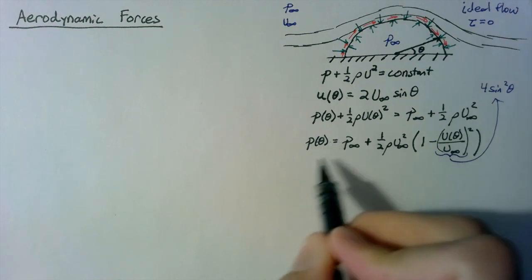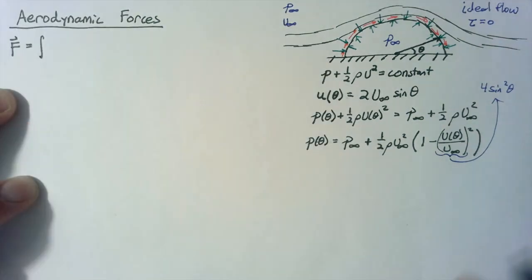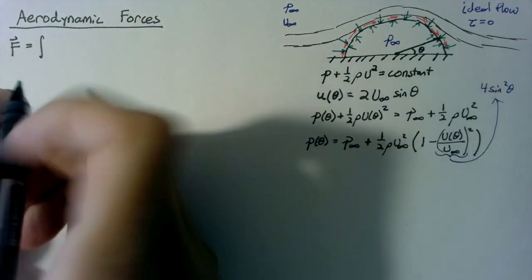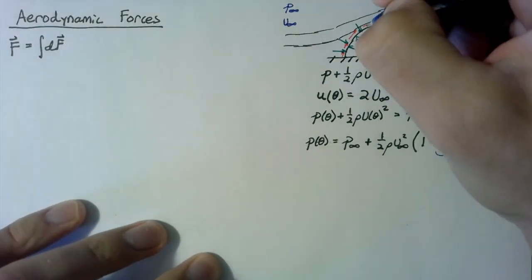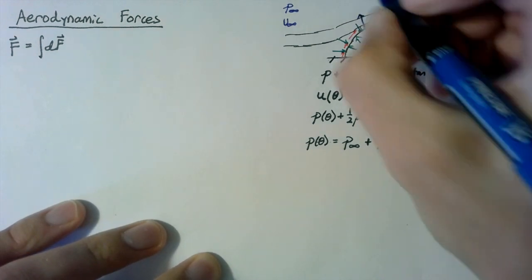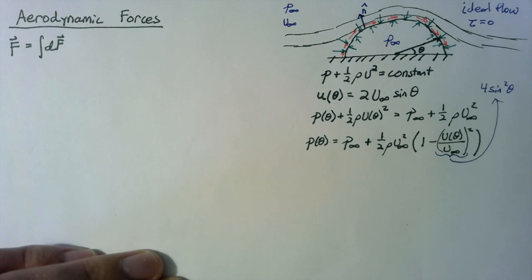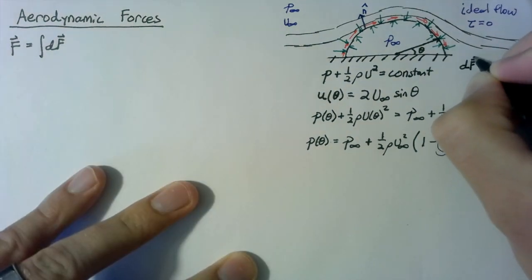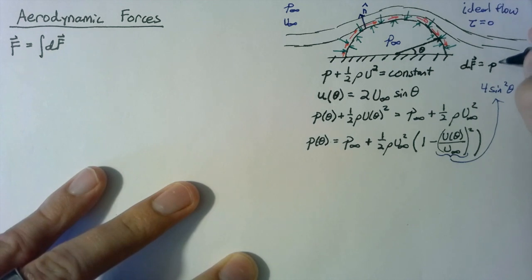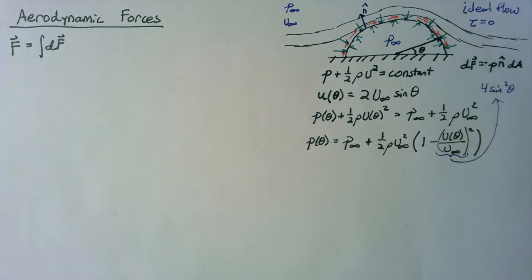The next step is taking the pressure we know and getting a force out of it. The force on a surface is the integral over that surface of the pressure pushing on the area — but we also need a direction. We define a normal vector n̂ pointing outward at every point along the surface. Our pressure pushes directly against that, so the force is negative p times n̂ times dA, giving us the force magnitude and direction for each small piece.